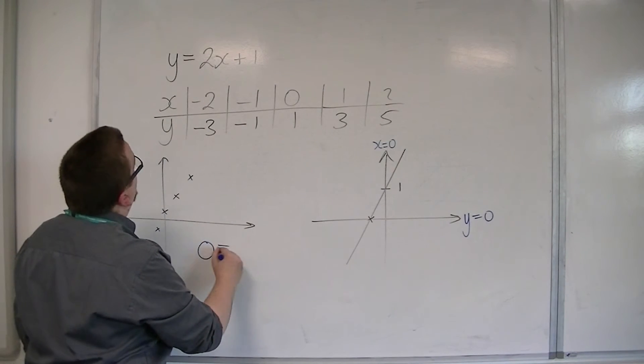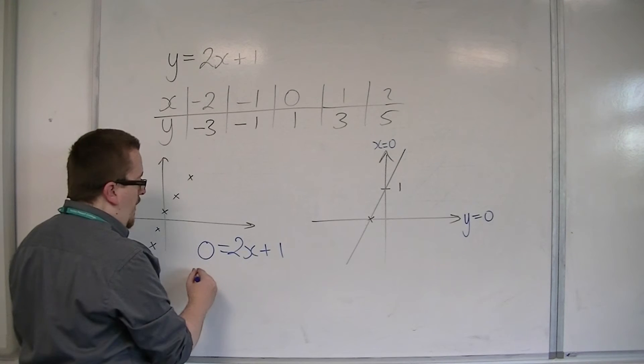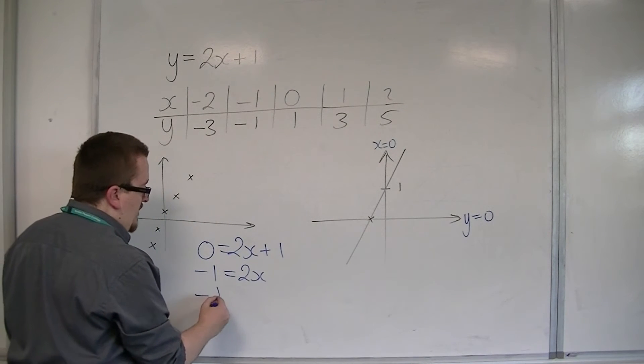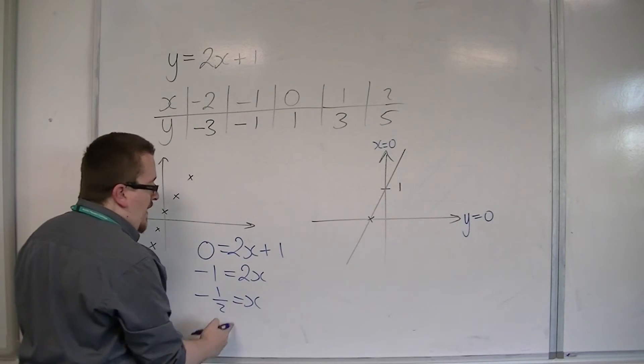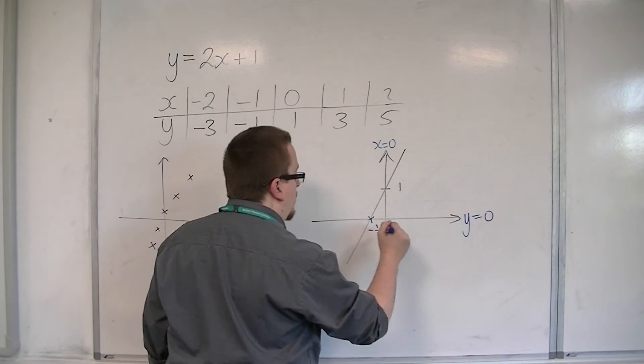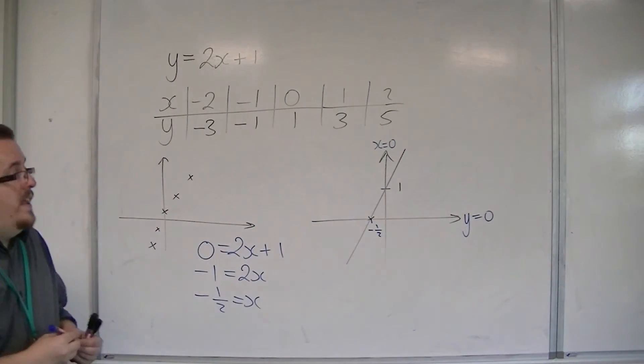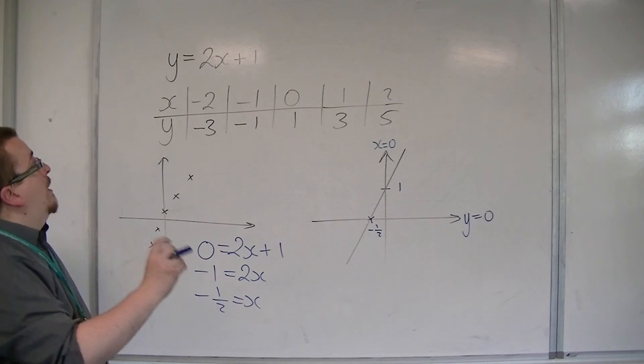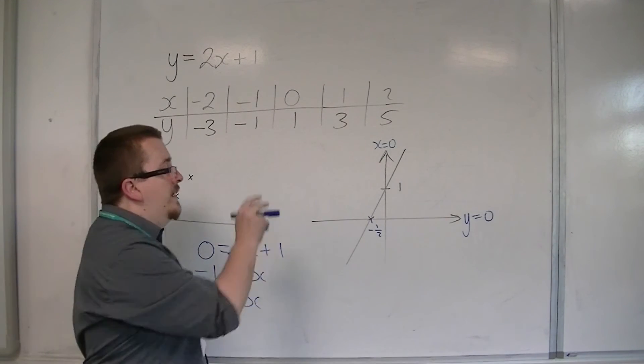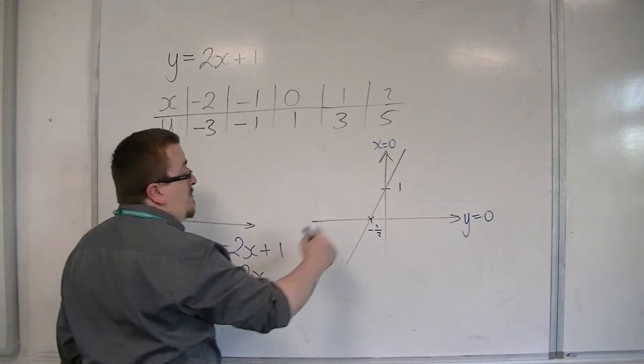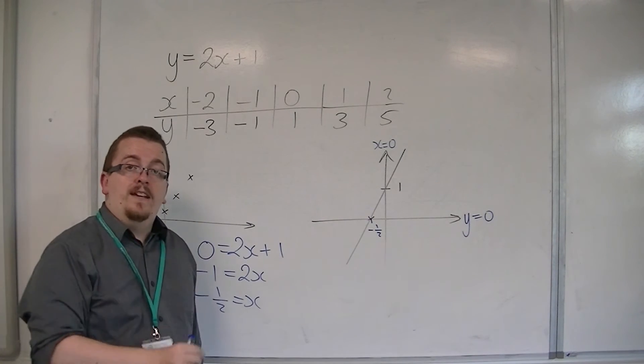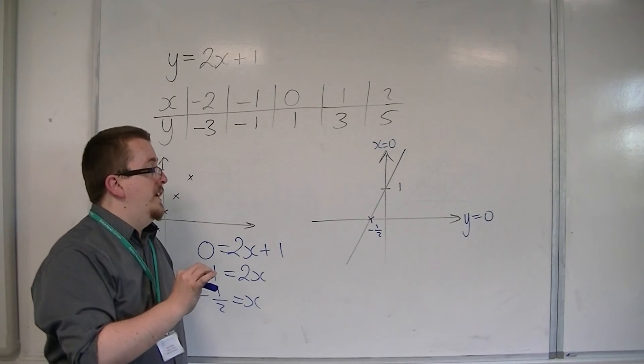then we get 0 equals 2x plus 1. Take 1 from both sides, and then divide both sides by 2. And that's telling me that it's crossing the x-axis at minus a half. And so this would be a perfect sketch of y equals 2x plus 1. It shows the general shape of the line. It shows that it's of positive gradient. It's telling me where it crosses the y and x-axis. But it's not exact. It's not perfect. That's the difference here.